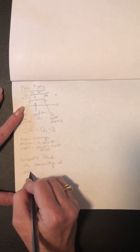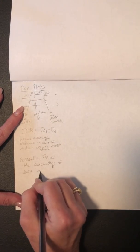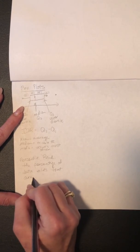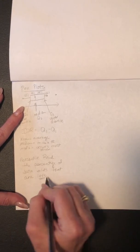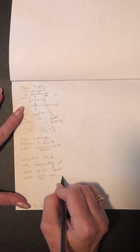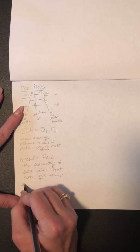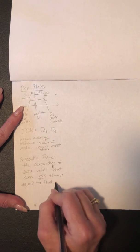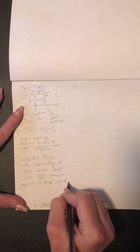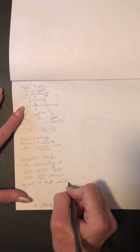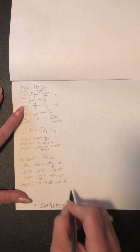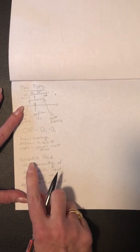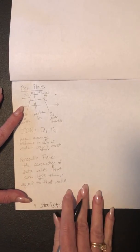The mean is the average, the median is the middle number after ordering, and the mode is the most frequent value. There can be no mode or more than one mode, but there can only be one mean and one median. If asked for a percentile rank, it is the percentage of data values less than or equal to that value.